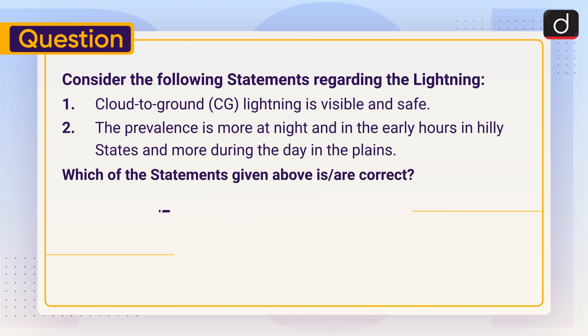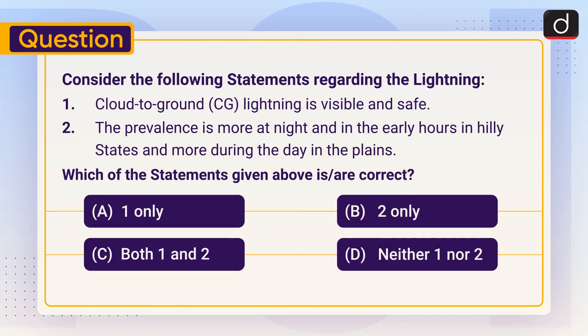Now it's time for the practice question. Consider the following statements regarding lightning: One — cloud-to-ground lightning is visible and safe. Two — the prevalence is more at night and in the early hours in hilly states, and more during the day in the plains. Which of the statements given above is or are correct? One only, two only, both one and two, or neither one nor two. Send the answer of this question in the comment section. Stay tuned for the next episode. Thanks for watching, have a great day.